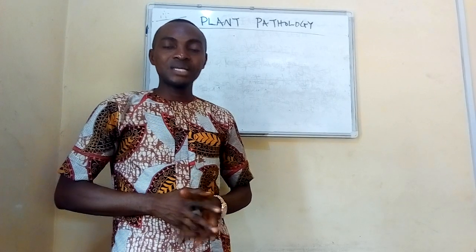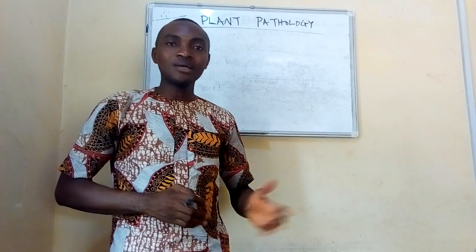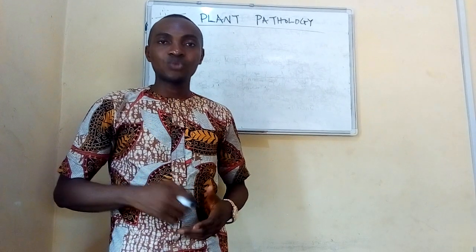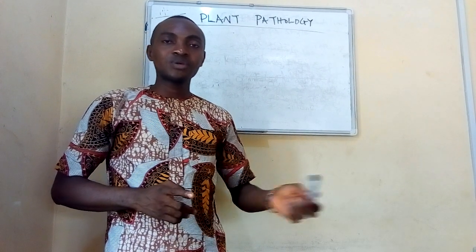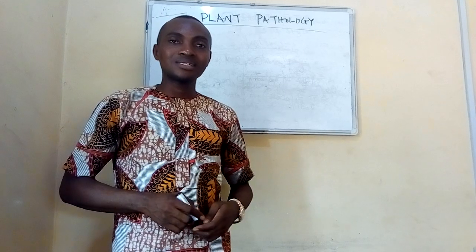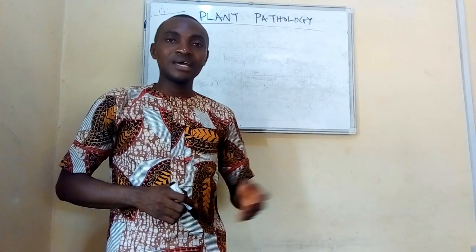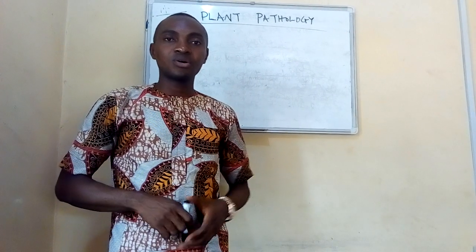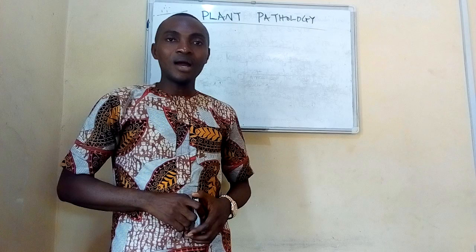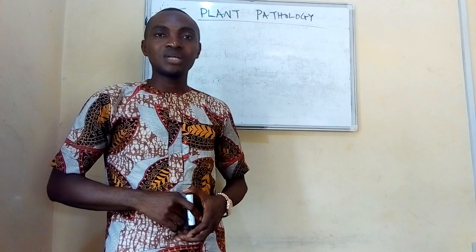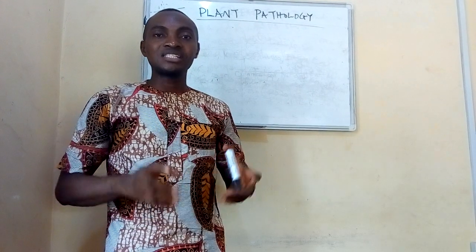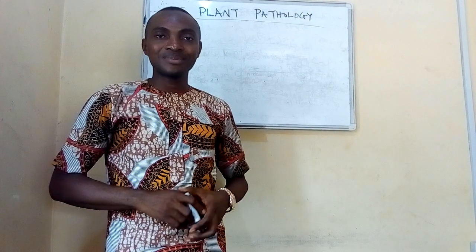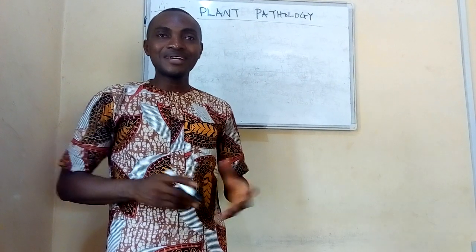A healthy plant must also be able to reproduce, be it sexually or asexually. Sexual reproduction in plants occurs via the flower, and asexual reproduction in plants is also known as vegetative propagation.